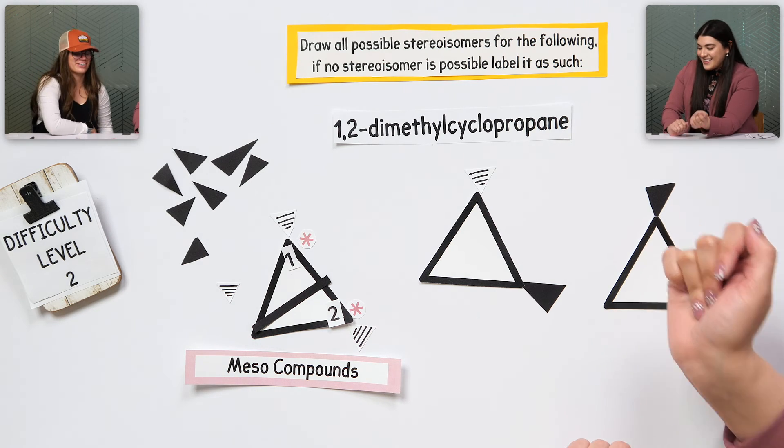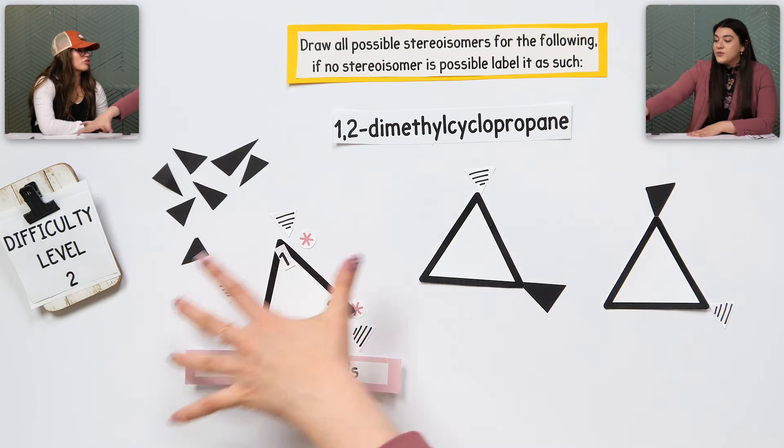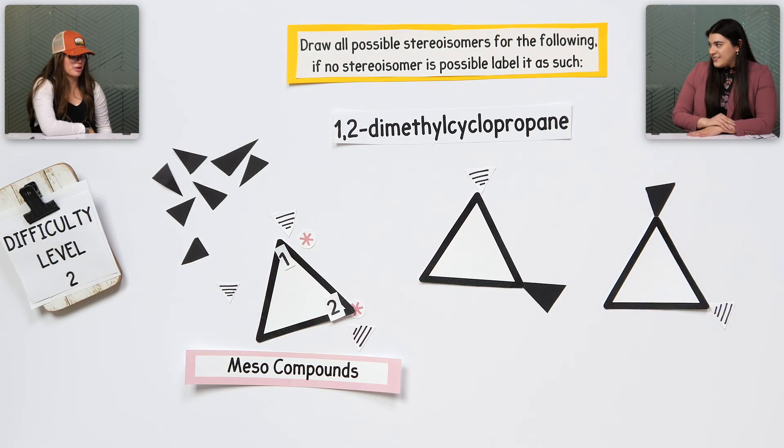But in this case, there's four possible, but there's only three actual. Yes. I see you. Okay. So if you like this practice problem and want to try another one, click right here. And if you want to watch the entire study session, click right here.